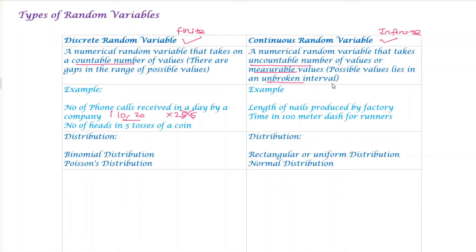The number of heads in five coin tosses is a discrete example — it can be 0, 1, 2, or 3. For a continuous random variable example, we measure the length of nails. In a 100-meter race, times can be 10.07, 10.02, or 10.06 — these are decimal values. So race times are continuous.